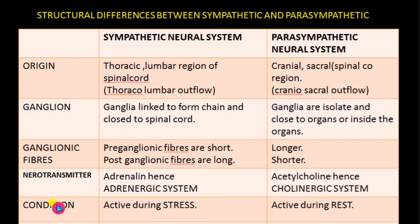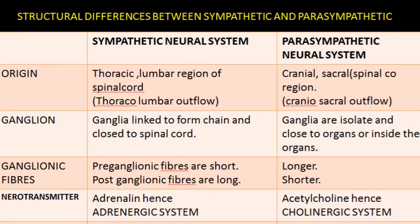The sympathetic neural system is activated during stressful conditions, fear conditions, and fight-or-flight situations. The parasympathetic neural system is antagonistic — it is active during the resting period and calms down the excited body. The effect of the sympathetic neural system is excitatory; it excites different organs to prepare the body for fight-or-flight, and the effect is widespread because post-ganglionic fibers are long.